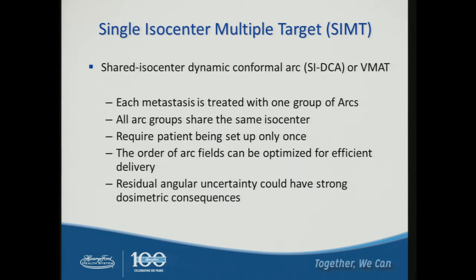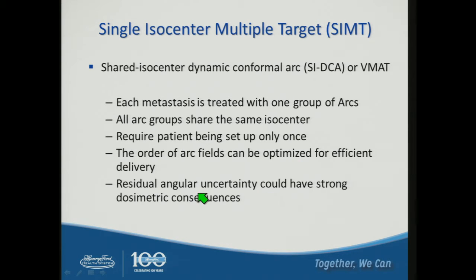Now for single iso multi-target treatment: there are two approaches — dynamic conformal arc, which has been historically used for brain mets, or VMAT. We developed a technique called shared isocenter dynamic conformal arc, where each metastasis is treated with one group of four to five arcs and all arc groups share the same isocenter. The benefit is that you only need to set up the patient once. However, a very big concern is residual angular uncertainty and its dosimetric impact on delivery.